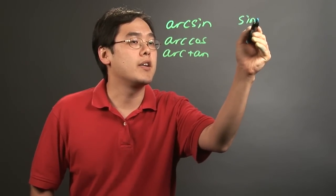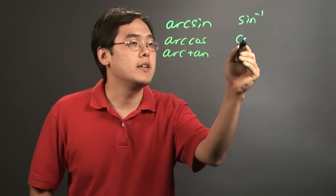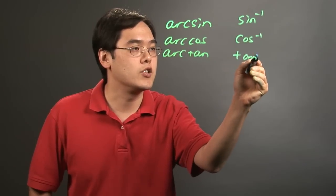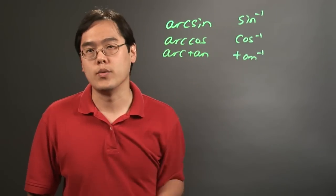Arcsine, arccosine, and arctangent also have these kinds of notations, sine inverse, cosine inverse, and tan inverse. So these are equal to each other.